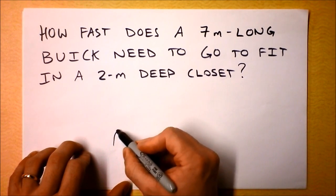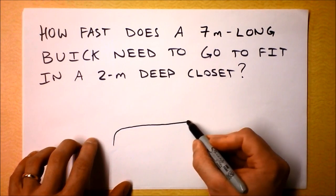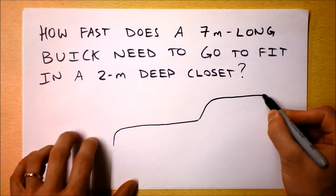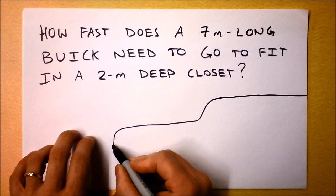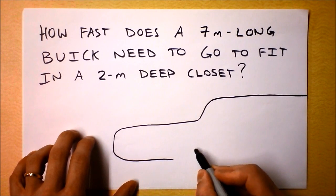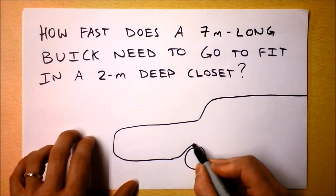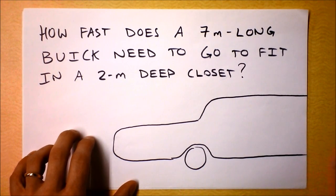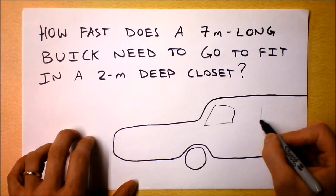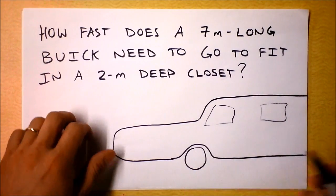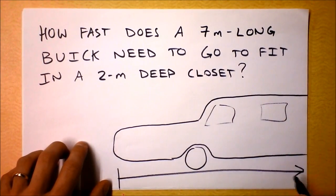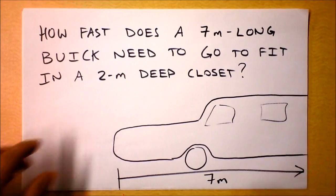So here's the end of the hood, and then it just keeps going back here. There's a lot of Buick back there too, and it's just going to keep going. Maybe there's a wheel somewhere in here, and then a little bit more car. It's a station wagon so it's not going to end for a long time back there. Although this Buick is seven meters long.